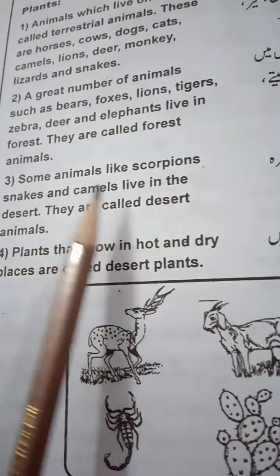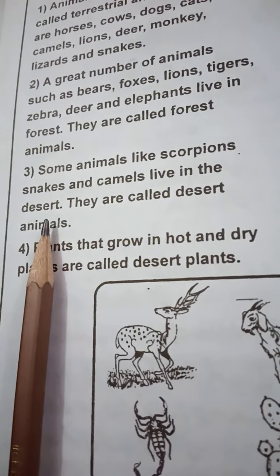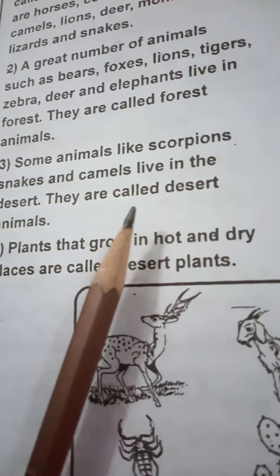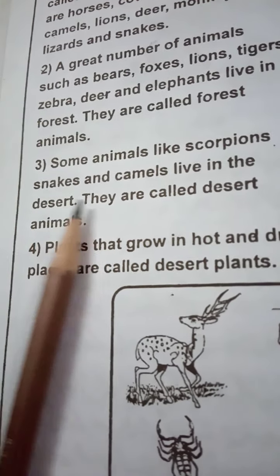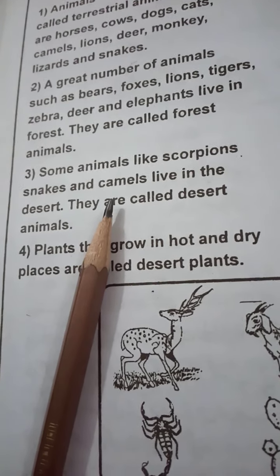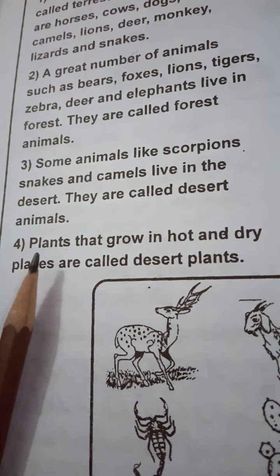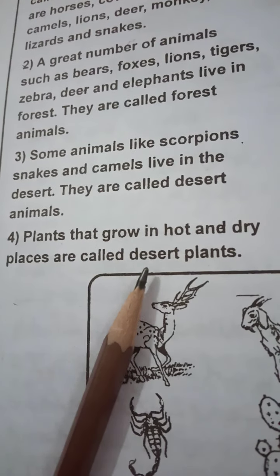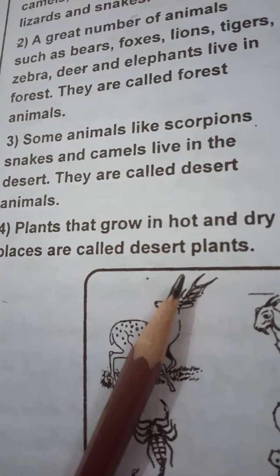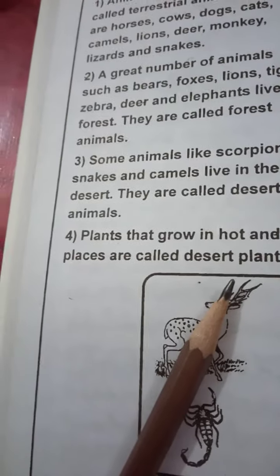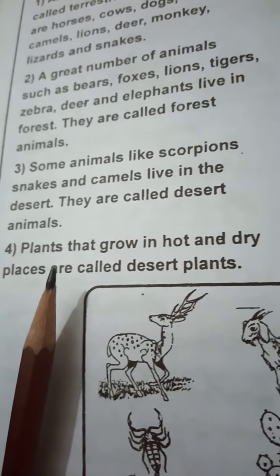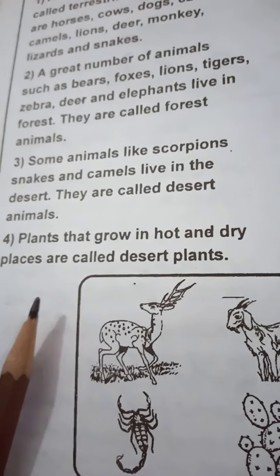Some animals like scorpions, snakes and camels live in the desert. Kuch janwar rigistan mein rehte hain — jaise scorpion, saamp, aur unt. Saamp rigistano mein bahut hote hain, aur unt ko rigistan ka jahazi kaha jata hai — yeh rigistani janwar kehlate hain. Plants that grow in hot and dry places are called desert plants. Kuch podhe bhi rigistano mein paye jate hain jahan pani bahut kam hota hai.